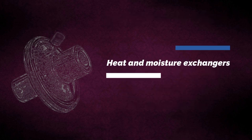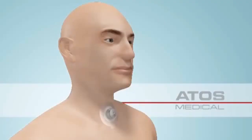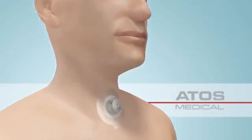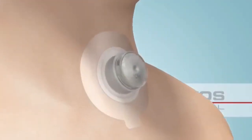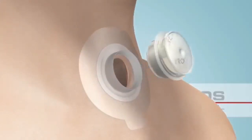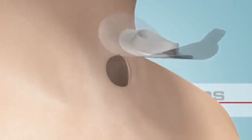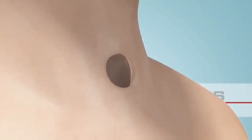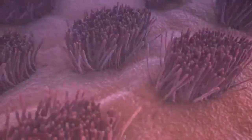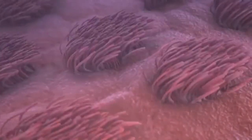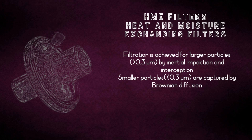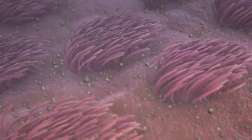The next type of filters are HME filters, known as heat and moisture exchangers. When the upper airways are bypassed and gas with inadequate humidity is delivered directly to the trachea, damage can occur to the lining of the trachea. In particular, inadequate humidity can cause dysfunction of the mucociliary elevator.